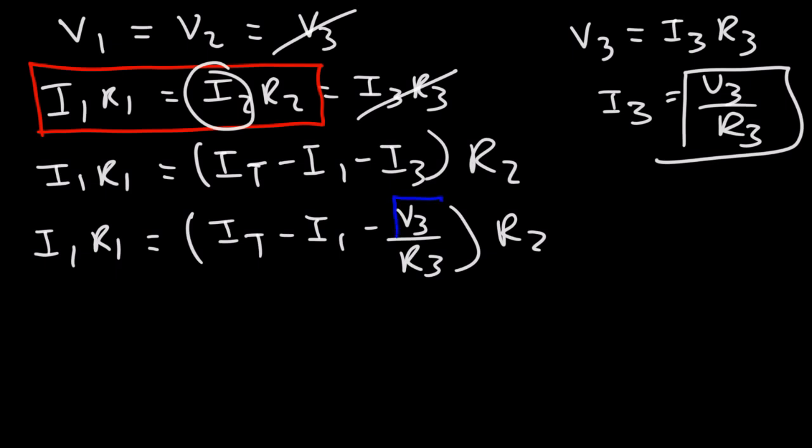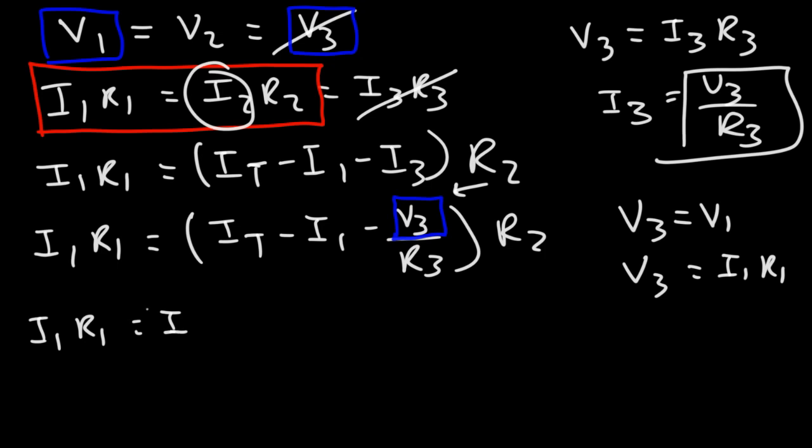So we're going to have I1 R1 is equal to IT minus I1 minus V3 over R3 times R2. Now, we need to do something with this V3 because we don't know the voltage across any of the resistors. Now, V3 is equal to V1, and we know that V1 is I1 times R1. So let's replace V3 with that.